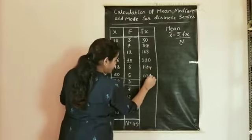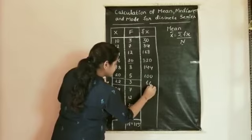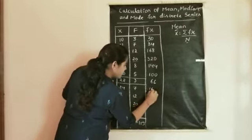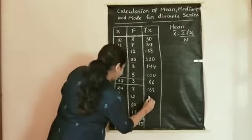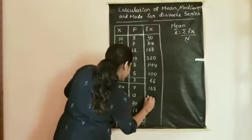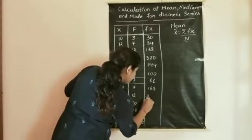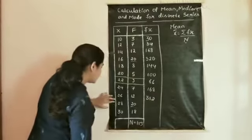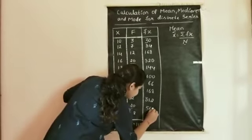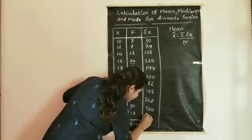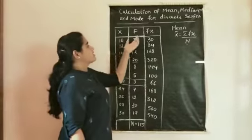Continuing the fx calculations: 25 × 4 = 100, 22 × 3 = 66, 24 × 7 = 168, 26 × 12 = 312, 28 × 20 = 560, and 30 × 18 = 540. So we have calculated the fx value for each given data point.